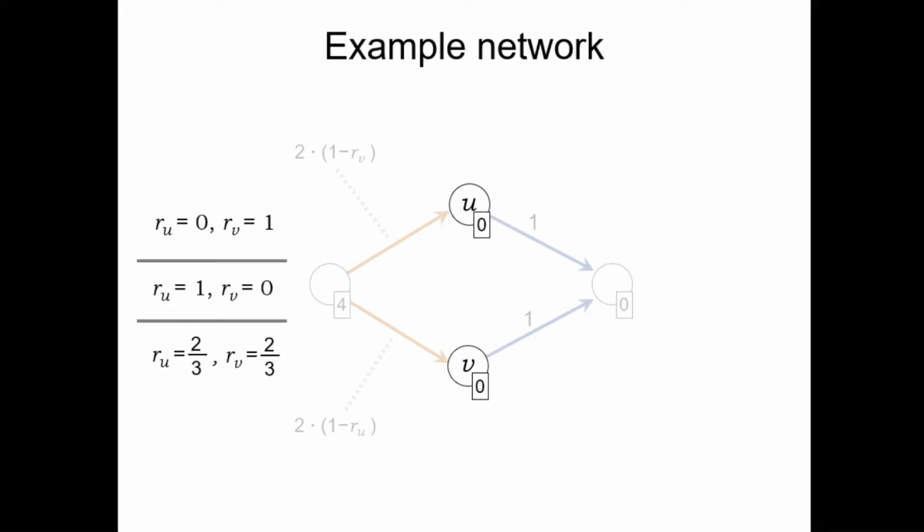There have been multiple previous works that studied this financial network model, but interestingly they have only studied the model in terms of these equilibria — analyzing whether they exist, whether they are hard to find, how to modify them. This is a valid approach when, for example, we have a large financial crisis and the authorities have to look at the entire system in a centralized manner and decide who is in default and who is not. However, apart from these rare occasions, the system usually develops in a sequential manner in practice: one bank announces a default, then another announces a default some time later, and so on, in a step-by-step fashion.